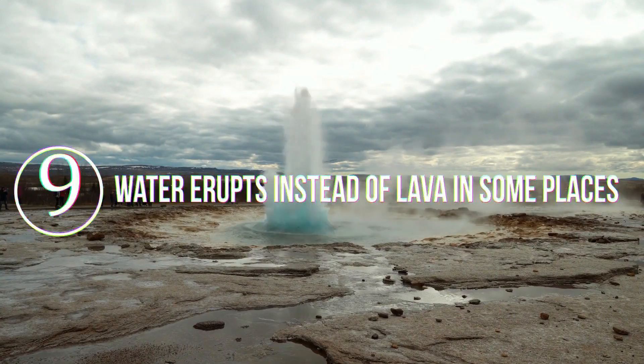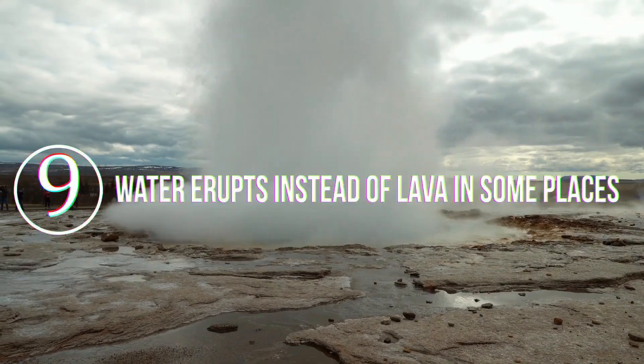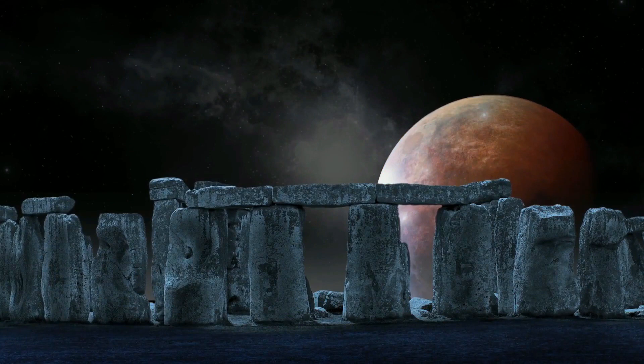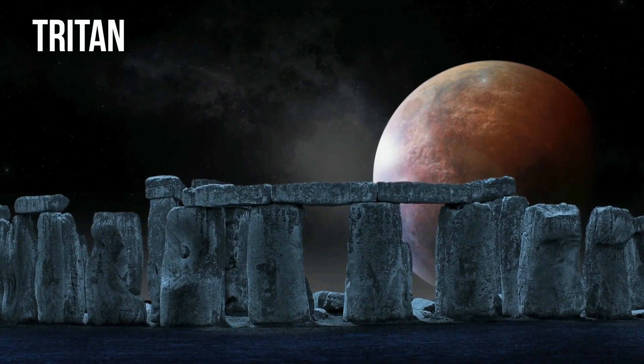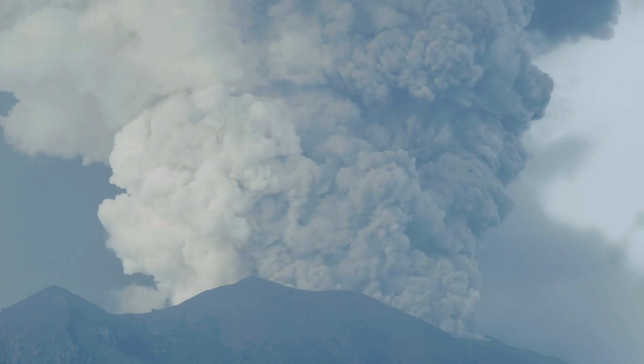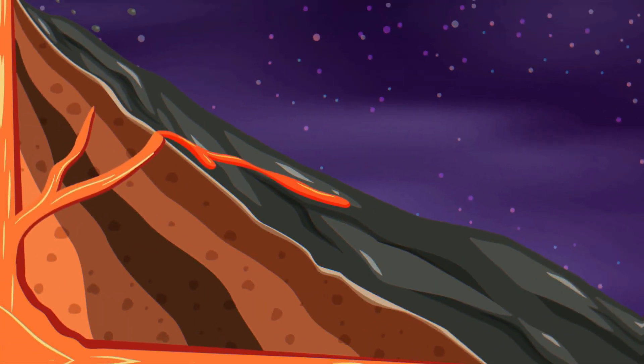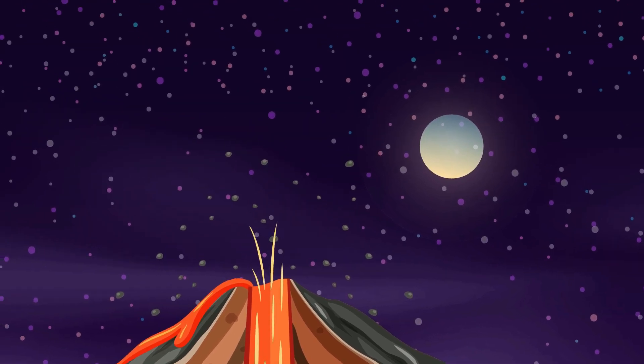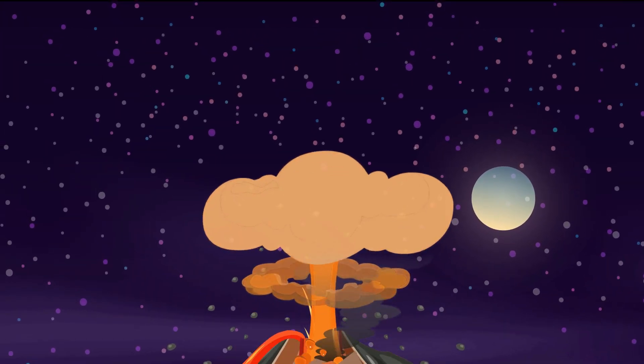Number 9. Water erupts instead of lava in some places. You probably thought of Hawaii when we mentioned volcanoes. But from now on, you'll think of Triton, Neptune's moon. Volcanoes on Earth require a kind of molten rock that we call lava. But it doesn't always have to be strictly lava. A volcano is formed when an underground reservoir of a hot, fluid mineral, or even a gas, erupts onto the planet's surface.